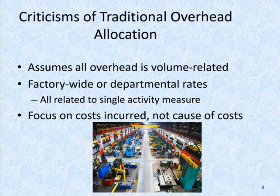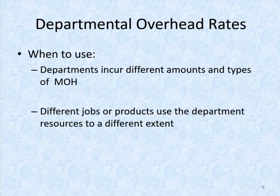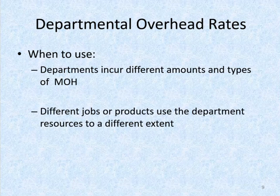Even machine hours may not suffice as the only plant-wide basis for allocating overhead if the manufacturing process is complex. Multiple allocation bases can result in more accurate product cost computations, and companies should consider an overhead cost allocation method that uses multiple bases, such as activity-based costing. If departments incur different amounts and types of manufacturing overhead, or if different jobs or products use department resources to a different extent, companies should consider establishing separate departmental overhead rates for each department.